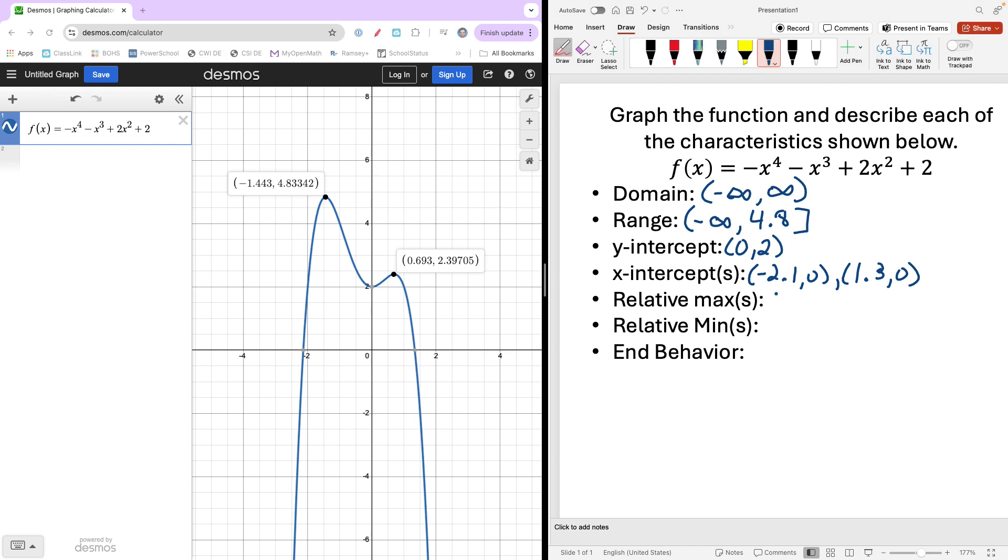My first one is at (-1.4, 4.8). And that 4.8 we saw was the highest point. And the other one, going to one decimal here, 0.7 is our x value, and 2.4 is that y value.